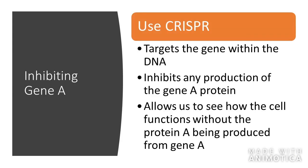With that being said, I think we should use CRISPR to try and inhibit gene A. I think we use CRISPR because it targets the specific gene within the DNA. If we allow it to cleave gene A and then allow the cell to try and repair it, since it is so error-prone, I think it will lead to a mutation which will prevent protein A from being produced from this gene, allowing us to see how the cell functions without this protein being produced.